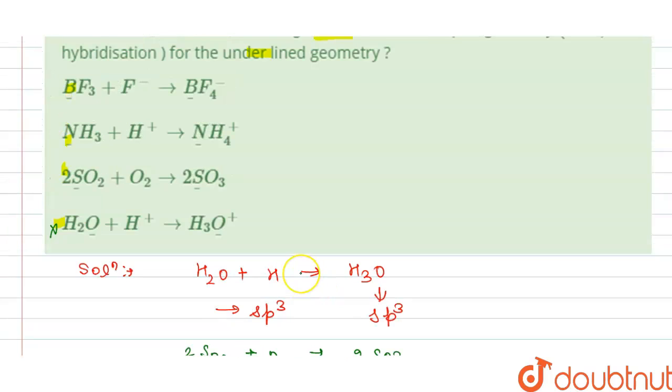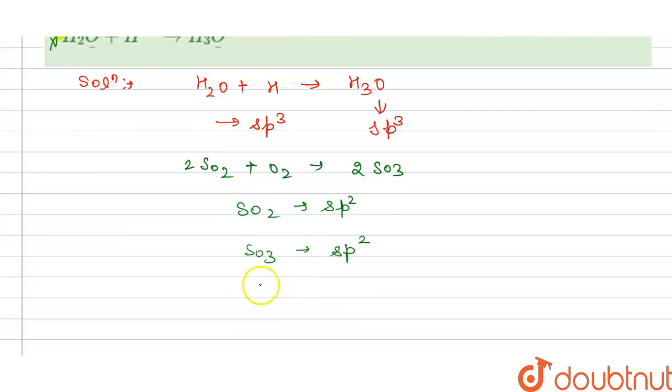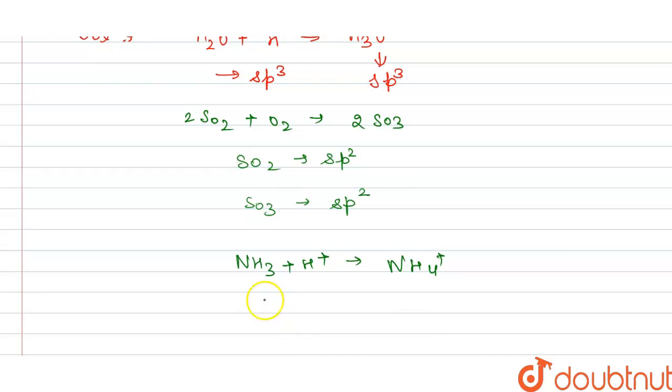We have two options left here. First, we check the NS3. In the NS3 plus H gives us NS4. In this we have...